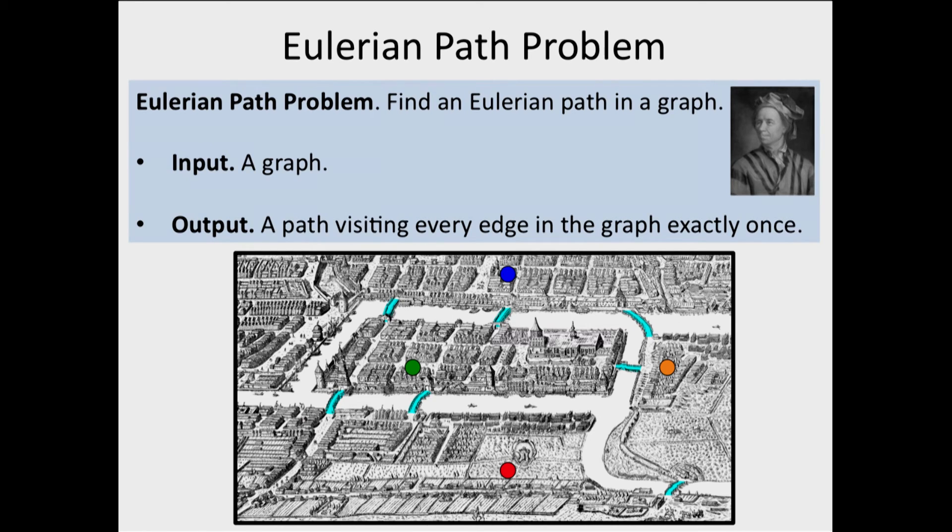And, as you remember, Euler solved this problem trying to solve the seven bridges of Königsberg problem. This is an ancient map of Königsberg. And the orange dot on this map is exactly where I took you to the field trip.